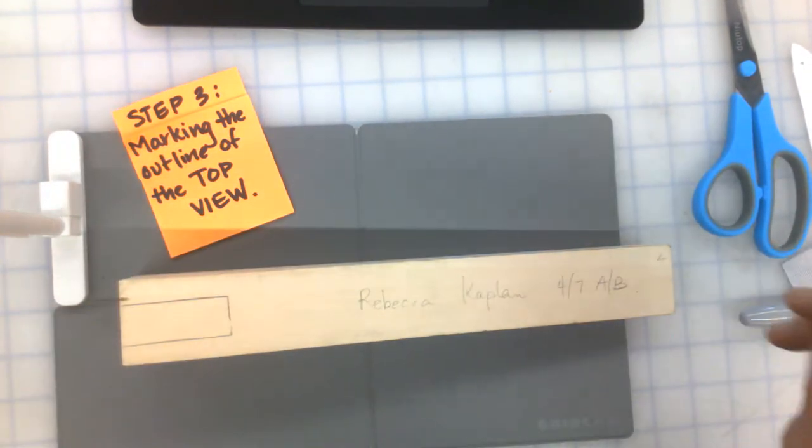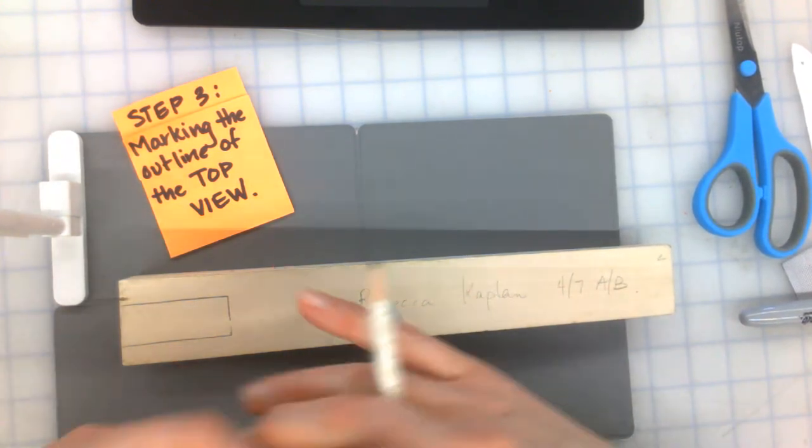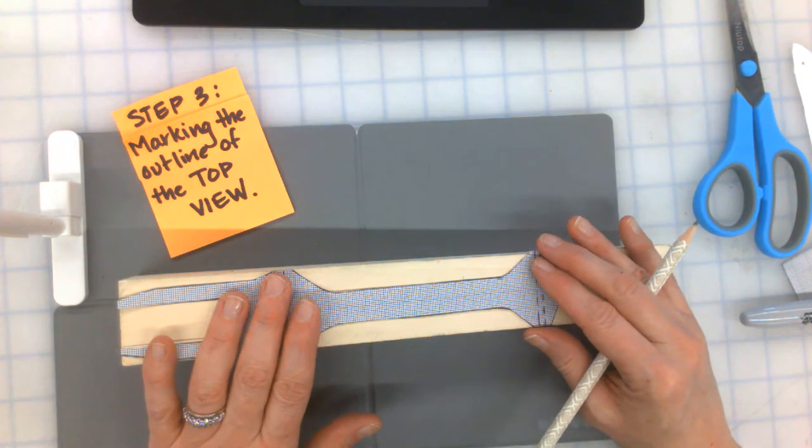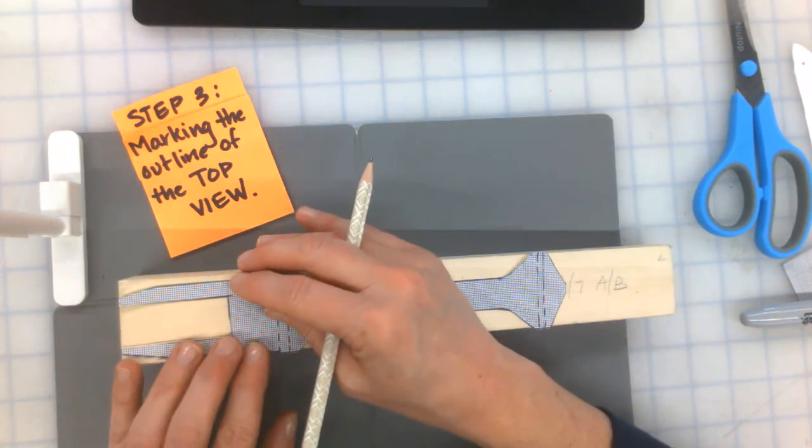And we're going to locate the bottom, draw the outline of the bottom. You really only need it on one side.